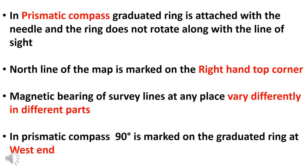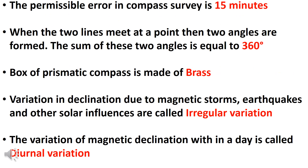The Prismatic compass will mark 0 degrees at the south end. The permissible error in the compass survey is 50 minutes.